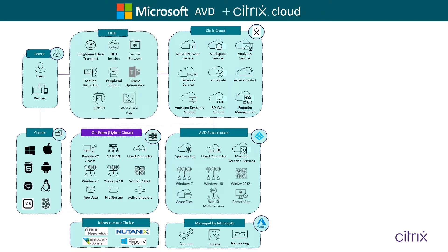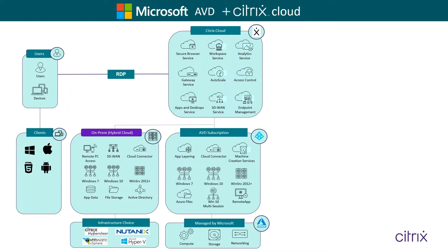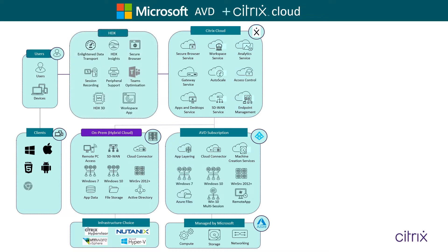We're also going to remove the RDP protocol that most customers use in AVD and replace it with our HDX protocol, which brings support for peripherals, Teams optimizations, 3D graphics, workspace apps, HDX insights, and other solutions only Citrix can provide. We will also allow even more clients to connect — previously customers had Windows, Apple, HTML5, and Android clients, but with HDX we have now added Google Chrome, Linux, iOS, and Raspberry Pi.